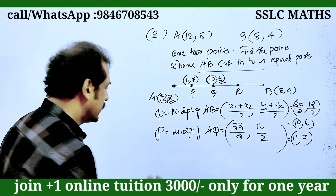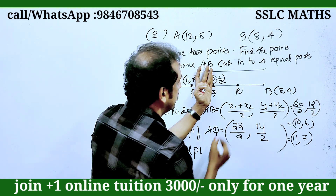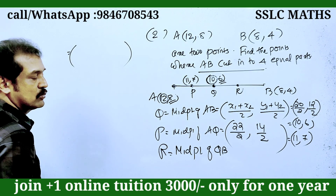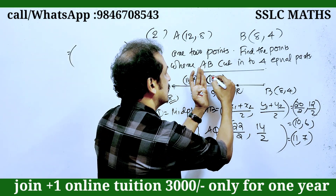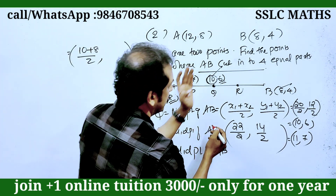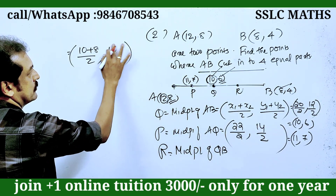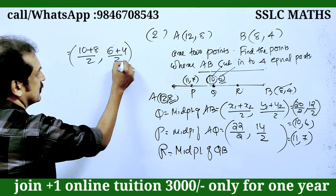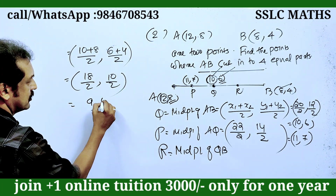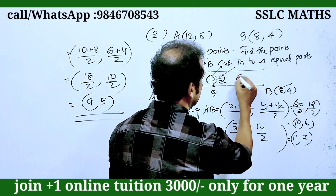Again, the midpoint of QB. Using the midpoint formula: x1 plus x2 by 2, y1 plus y2 by 2. The x coordinate is 10 plus 8 by 2. The y coordinate is 6 plus 4 by 2, which equals 10 by 2. That is equal to 18 by 2 and 10 by 2. The answer is 9, 5.